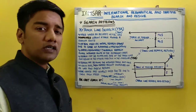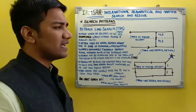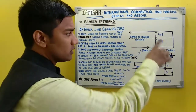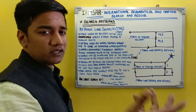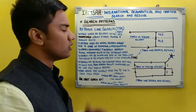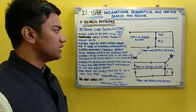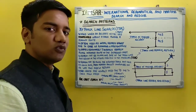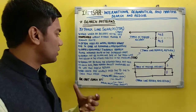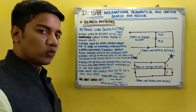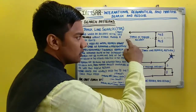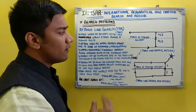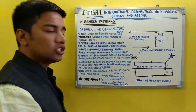Moving on to our third search pattern, which is track line search. Track line search is used when an aircraft or a vessel has disappeared along its known route. This type of search pattern is often used as an initial search effort due to the ease of planning and implementation. A rapid and reasonably thorough search is required along the intended route of the distress craft.